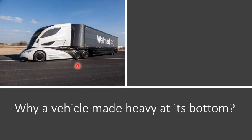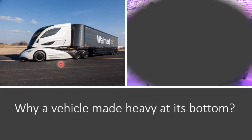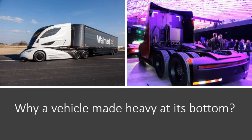A vehicle is made heavy at its bottom to keep its center of gravity as low as possible. A lower center of gravity keeps it stable. Moreover, the base of the vehicle is made wide, as you can see in the figure, so that the vertical line passing through the center of gravity should not get out of its base during a turn.